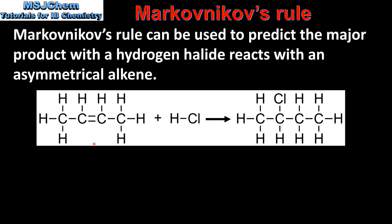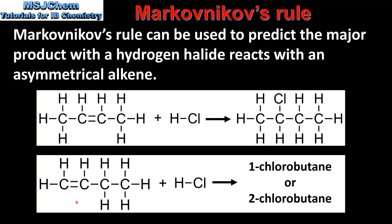In this reaction we have but-2-ene reacting with hydrogen chloride to produce 2-chlorobutane. But-2-ene is a symmetrical alkene, therefore when it reacts with a hydrogen halide there's only one possible product, which is 2-chlorobutane.